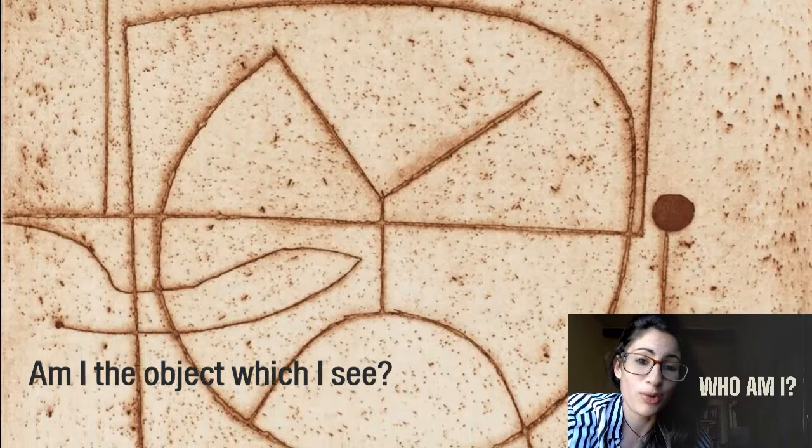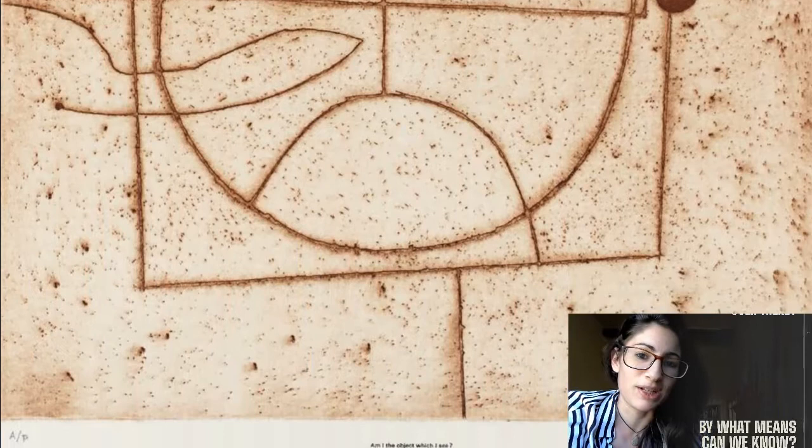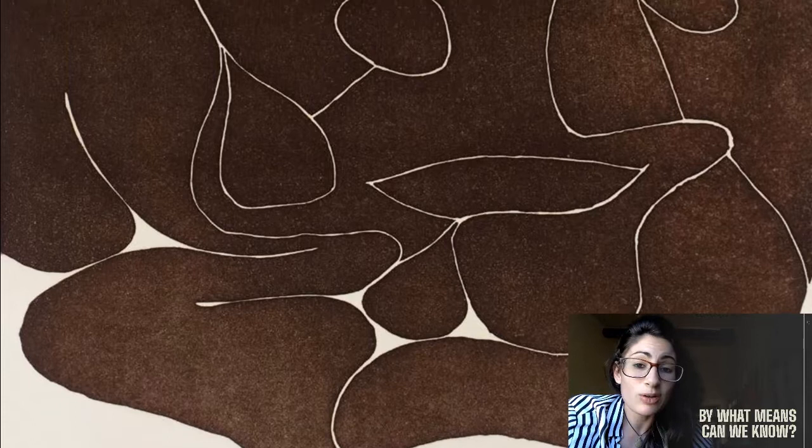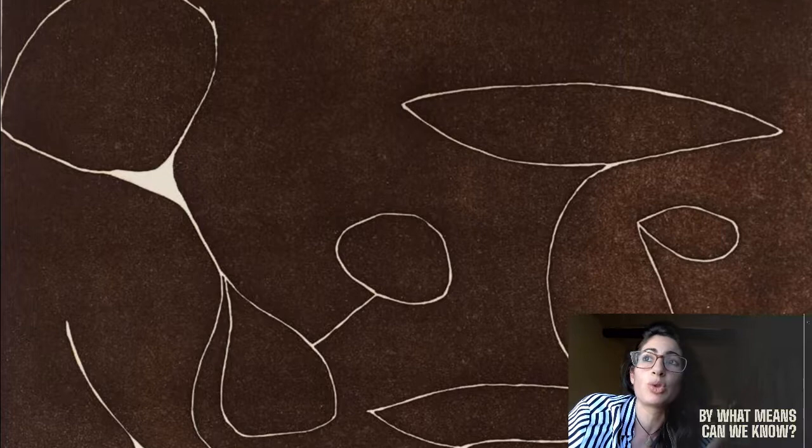In several of his poetic writings, Pasmore questions the self, the identity of things, questions like who am I or who are you or what is the image over there or by what means can we know? These are all titles of some of his poetry, but they are also a parallel, an extension maybe, of the same way that he seems to question his own artistic process.